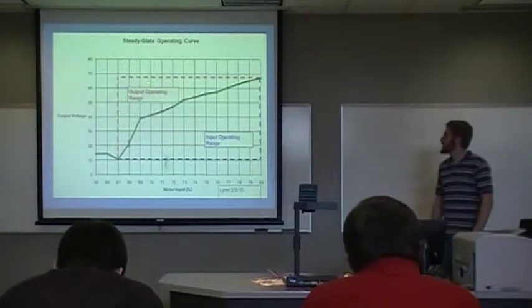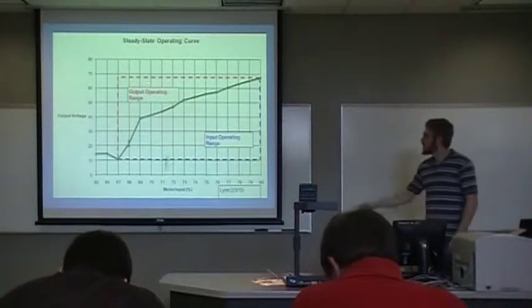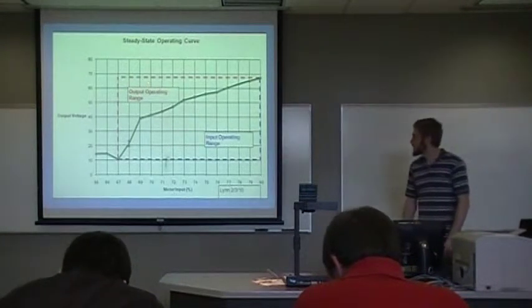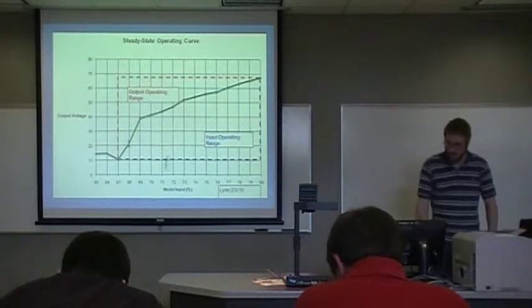Here's our steady state operating curve. We have 10 volts to 70 volts, and it's an operating range of 55% motor speed to 80%.